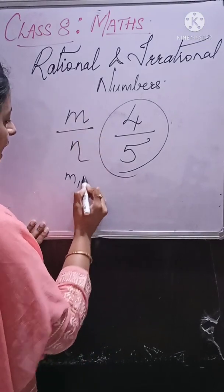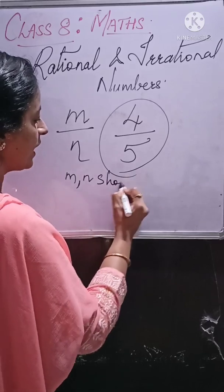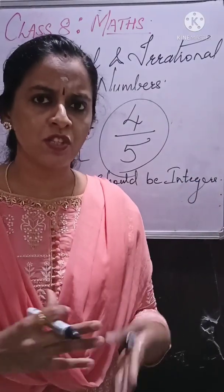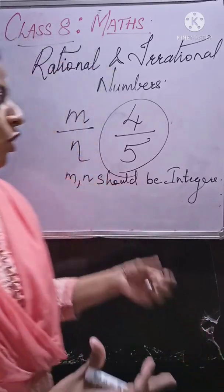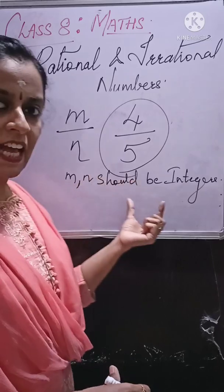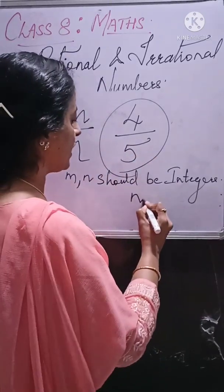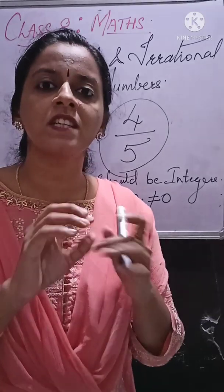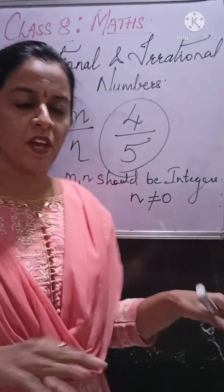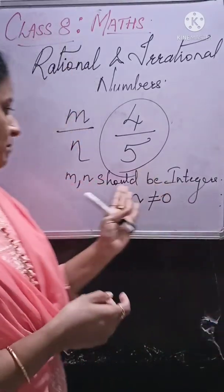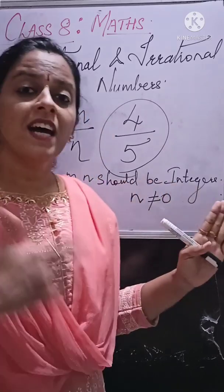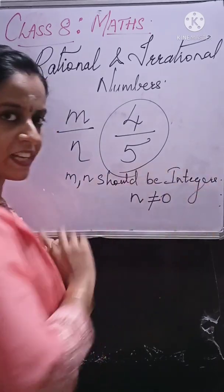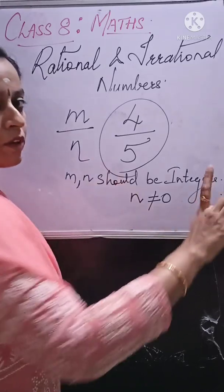Now there is a certain condition you have to specify. M and N both should be integers — this is a very important point. So what are rational numbers? Rational numbers are in the form M upon N, where M and N are both integers. And one more condition: N should not be equal to 0. As soon as we discuss examples, everything will be fine.